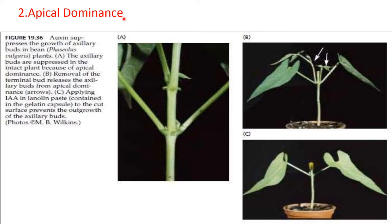Apical dominance: the apical or terminal bud of many vascular plants is very active while lateral buds remain inactive. Removal of the apical bud promotes lateral buds to grow. Apical dominance is due to much higher auxin content in the apical bud than in lateral buds. Skoog and Thimann first pointed out that apical dominance might be under the control of auxin produced at the terminal bud, which is transported downward through the stem.